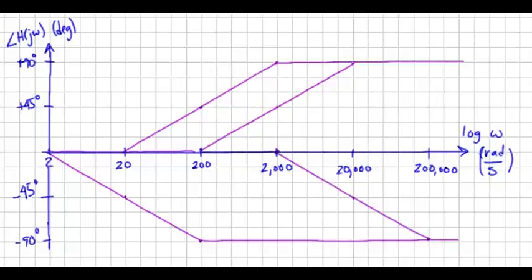And of course it's again minus 90 degrees after that. So to construct the composite, which I'll draw in red, starting at the beginning at 2 radians per second, we have one contribution of minus 45 degrees per decade. Then during the second decade, the zero kicks in, so that cancels out here. We're left with a constant.